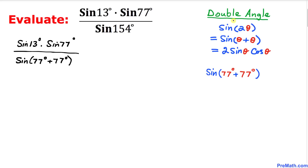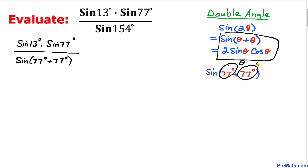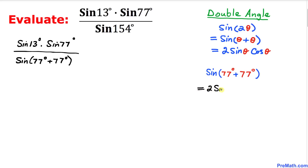Now let's focus on the denominator: sine of 77 plus 77. We will be using the double angle formula: sine of theta plus theta equals 2 sine theta cosine theta. In our case, this 77 is our theta. So sine of 77 plus 77 can be written as 2 sine of 77 degrees times cosine of 77 degrees.